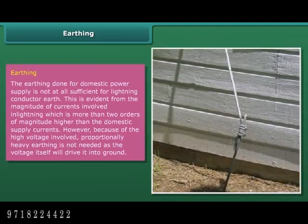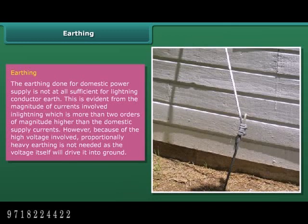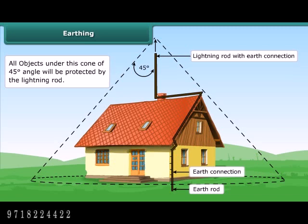The earthing done for domestic power supply is not sufficient for a lightning conductor earth, as the magnitude of currents involved in lightning is more than two orders of magnitude higher than domestic supply currents. However, because of the high voltage involved, proportionally heavy earthing is not needed, as the voltage itself will drive it into the ground. The cone of protection describes the volume of protection offered and provides a simple graphical tool for installing a lightning conductor protection system.